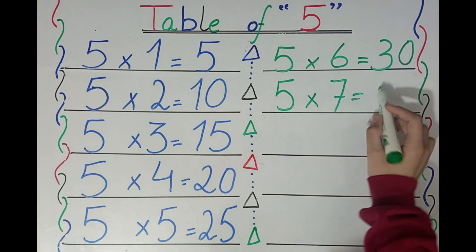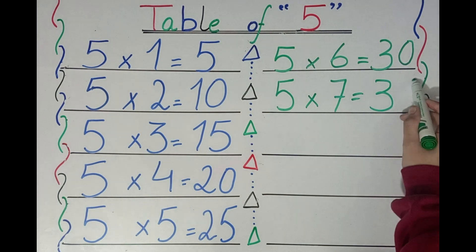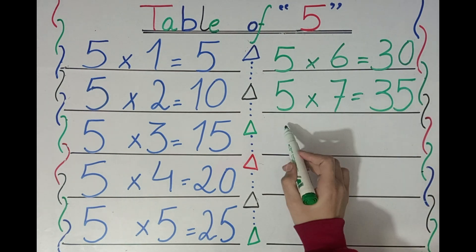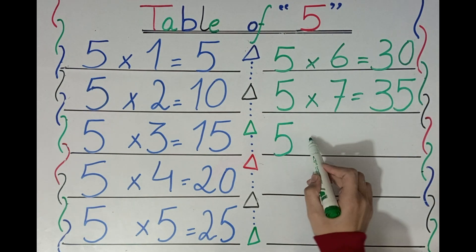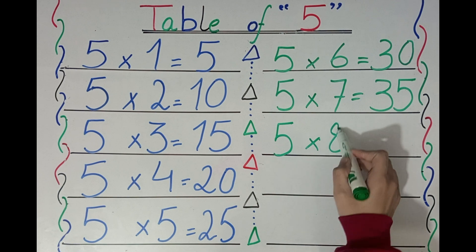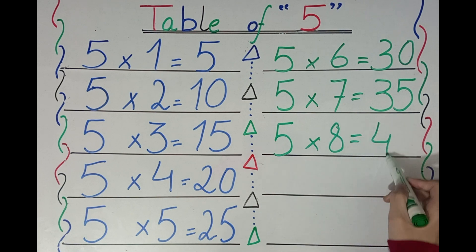Five sevens are thirty-five. Five eights are forty.